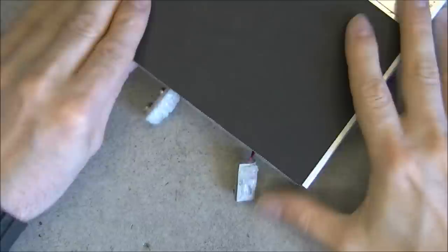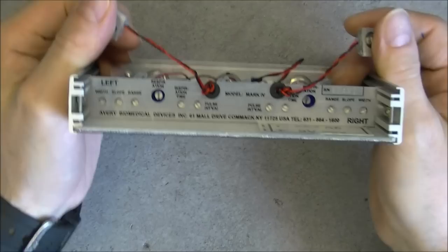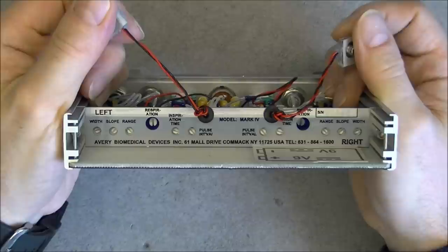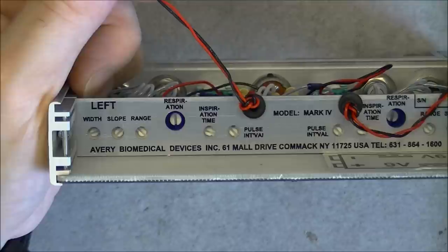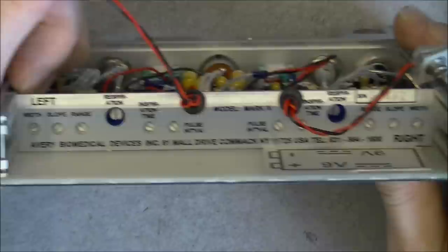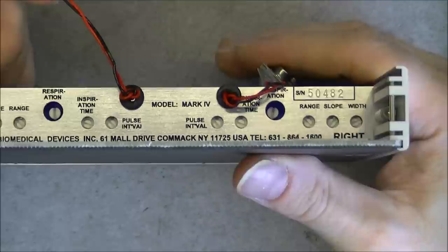On the back here we have, I will first remove this because it will be easier, we have a bunch of information settings. So they are not the user-adjustable settings, they are the practitioner settings probably. You will adjust one time and not modify until the next checkup. You have the information about the company, who made it, and you have a serial number of 50,482.